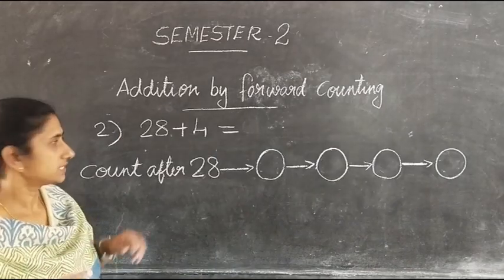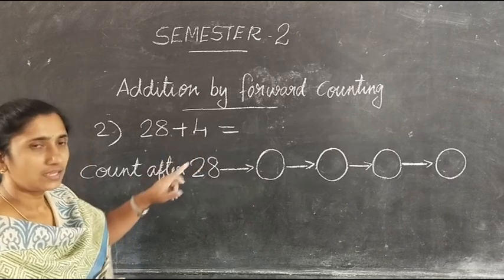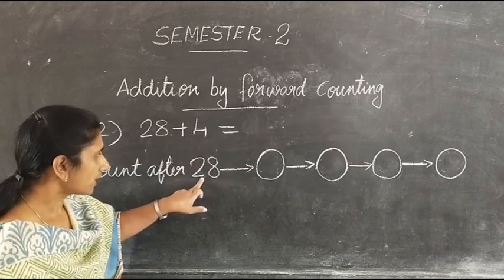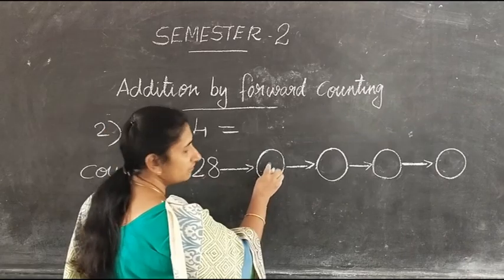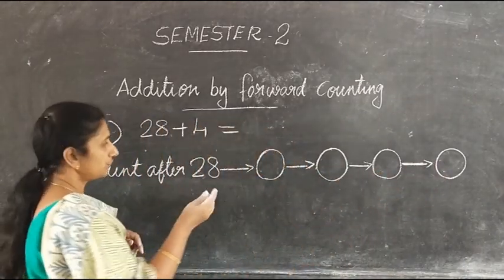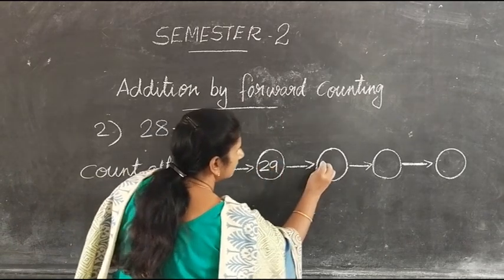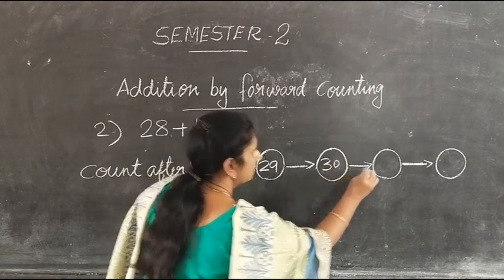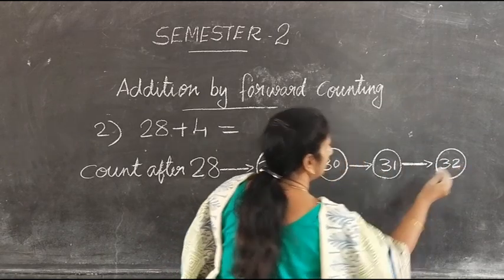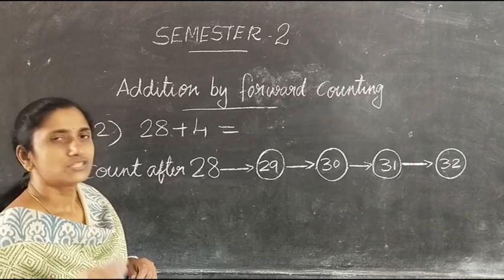Our next question is 28 plus 4. To add 28 and 4, first we have to write the number 28, then we have to draw 4 circles like this and count on: 29, 30, 31, 32. Now we got the number 32. So our answer is 32.